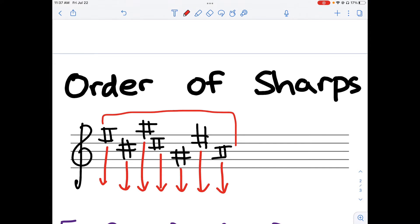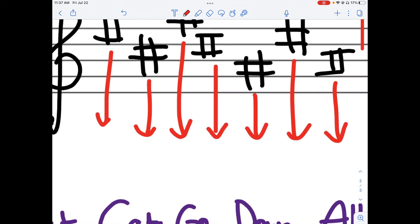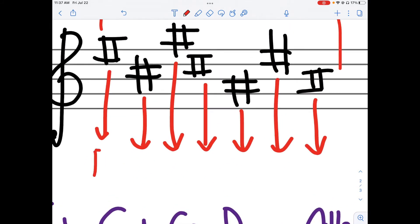So there's something called the order of sharps, which helps us determine what major key we're in. The order of sharps starts with F, C, G, D, A, E, and B.